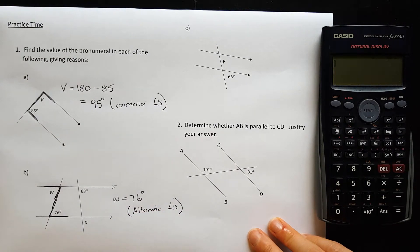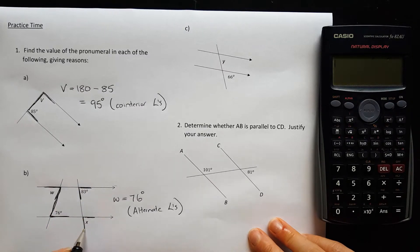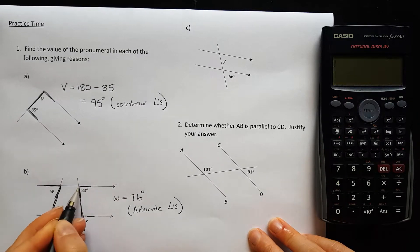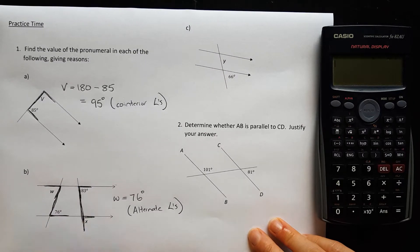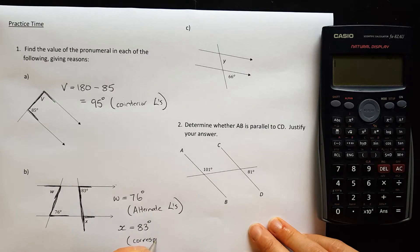Now I have to find X over here. Well, 83 and the X are forming an F shape. So that means that X will be equal to the 83 degrees, and the F shape is called corresponding angles.